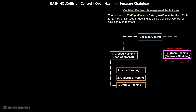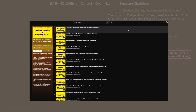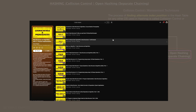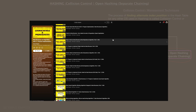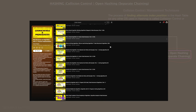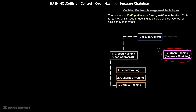I'm assuming that you guys have already seen the previous videos of hashing and collision control in this DSA playlist. If not, please do check it out — that will set you up very well to understand this video. We will understand in detail what is separate chaining, see an example, and try to solve a problem sum. Essentially, in very simple terms, the process of finding an alternative index position in the hash table is called collision control or collision management.